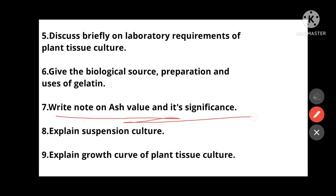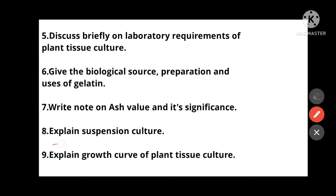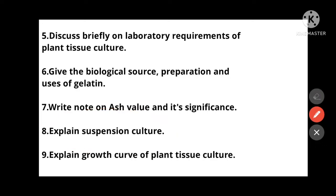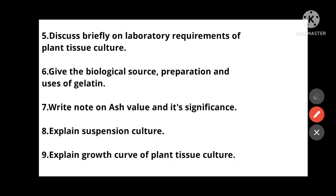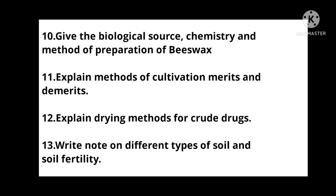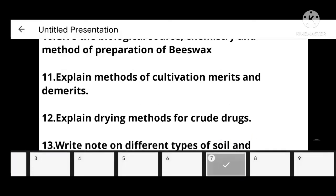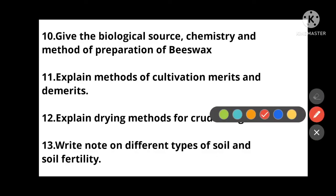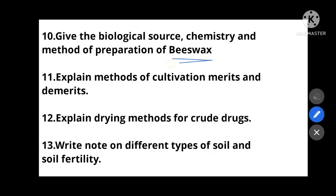This ash value question was asked in 2020-21. Next: Explain suspension culture. Then: Explain the growth curve of plant tissue culture — you have to draw and show a graphical curve to get marks. Also: Give the biological source, chemistry, and method of preparation of beeswax. Then: Explain the methods of cultivation, merits and demerits — advantages and disadvantages of cultivation methods.